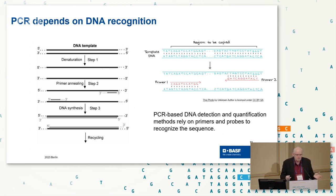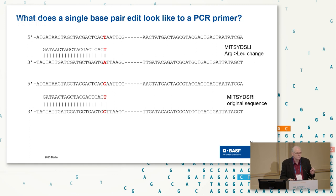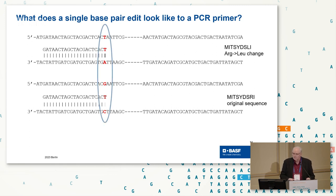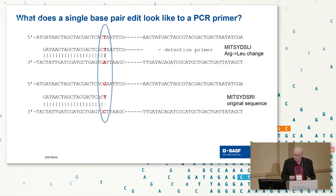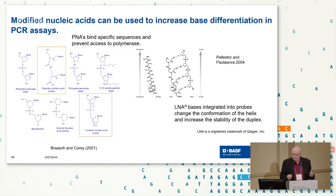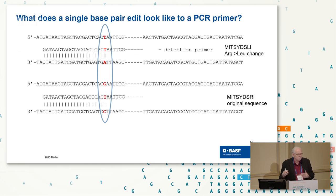The question is: what does a single base pair look like if you're trying to do a PCR with a primer mismatch at the end of the primer? I drew up a fictional example where we've changed arginine to leucine in a protein. Once you get extension of that first primer cycle, everything looks the same. So the only chance you have to differentiate in the PCR is the first cycle.